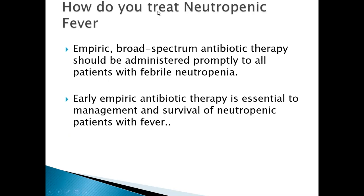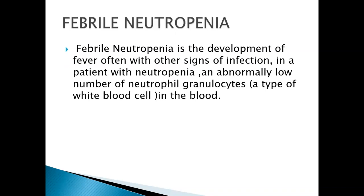How do we treat neutropenic fever? Empiric broad-spectrum antibiotic therapy should be administered promptly to all patients with febrile neutropenia. Early empiric antibiotic therapy is essential for management and survival. Febrile neutropenia is the development of fever, often with other signs of infection, in a patient with an abnormally low number of neutrophils or granulocytes in the blood.